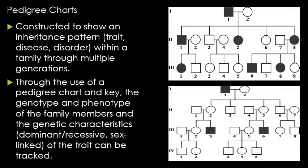In a pedigree chart, squares represent males, circles represent females, and colored-in shapes indicate that the individual has the disease. In the first pedigree example, we have a family with an autosomal dominant genetic trait. The gene for this trait does not occur on a sex chromosome — it occurs on an autosomal chromosome because both males and females have the trait.